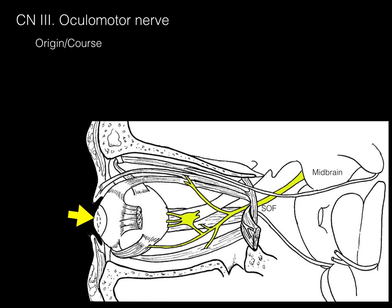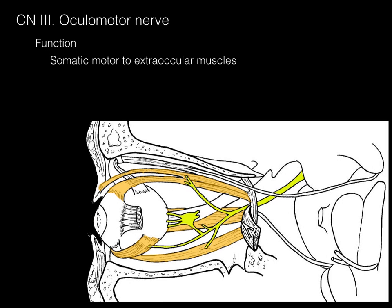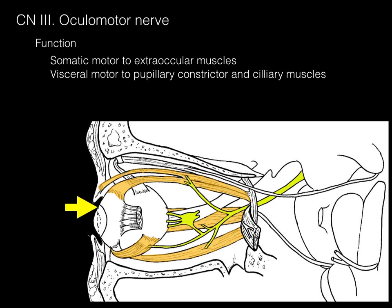In addition to the extraocular muscles, cranial nerve 3 also goes to the pupil and the lens, working on those from an autonomic parasympathetic level. We'll first discuss the somatic motor to the extraocular muscles, and then the visceral motor to the pupillary constrictor and ciliary muscles.